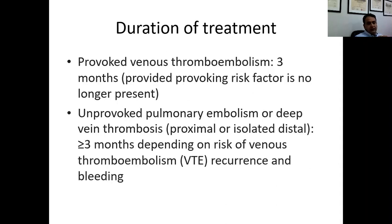Regarding duration of treatment: if the DVT or PE is provoked, three to six months is generally sufficient. If it is unprovoked — especially pulmonary embolism or distal DVTs — current recommendations suggest more than three months, and treatment can extend to lifelong anticoagulation depending on the severity of the initial pulmonary embolism event and whether it was unprovoked.